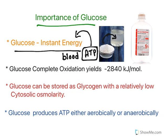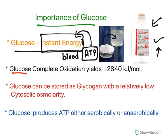Even when people become very sick and are very weak, they are administered a five percent weight by volume dextrose. Dextrose is nothing but the D-isomer of glucose. This is given to increase the patient's energy levels. This is the significance — glucose provides instant energy, which is why it is preferred.